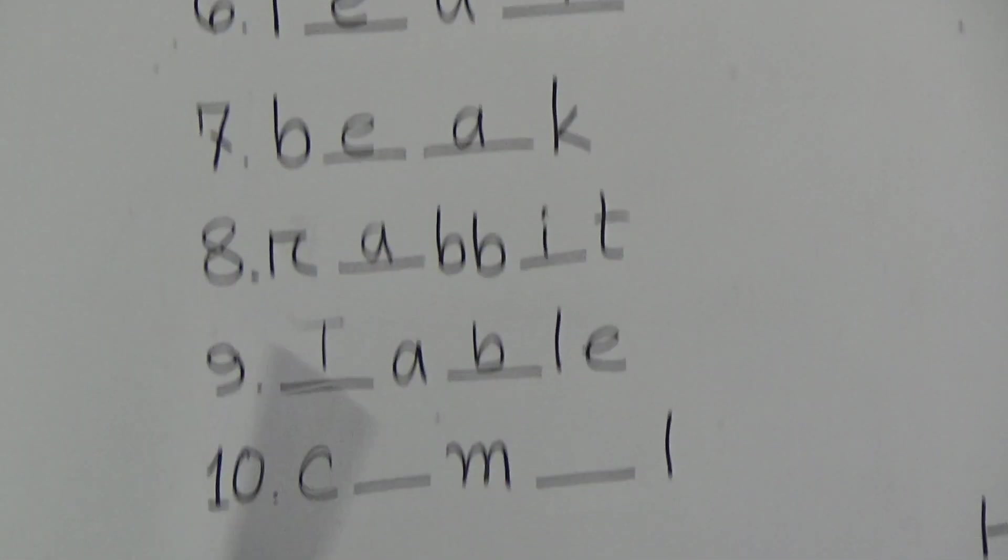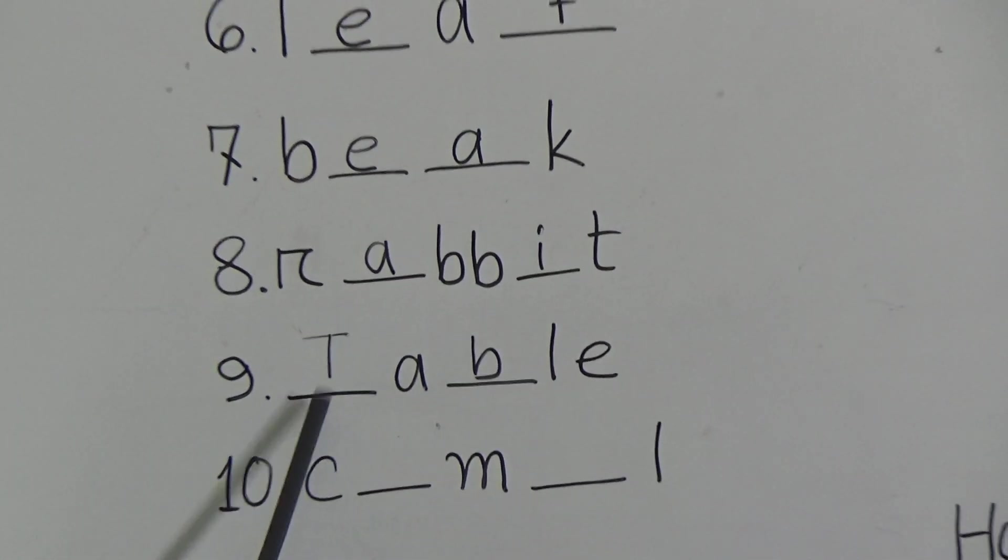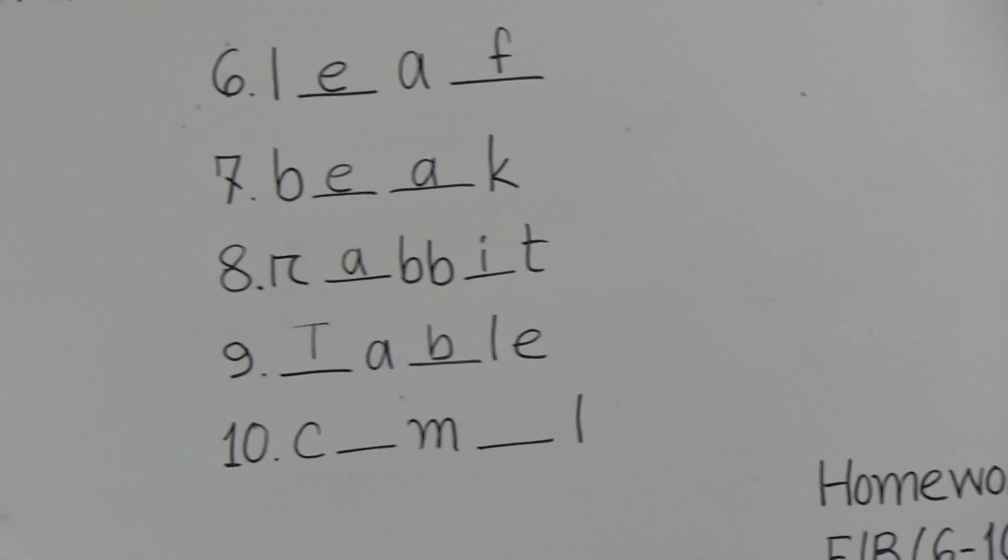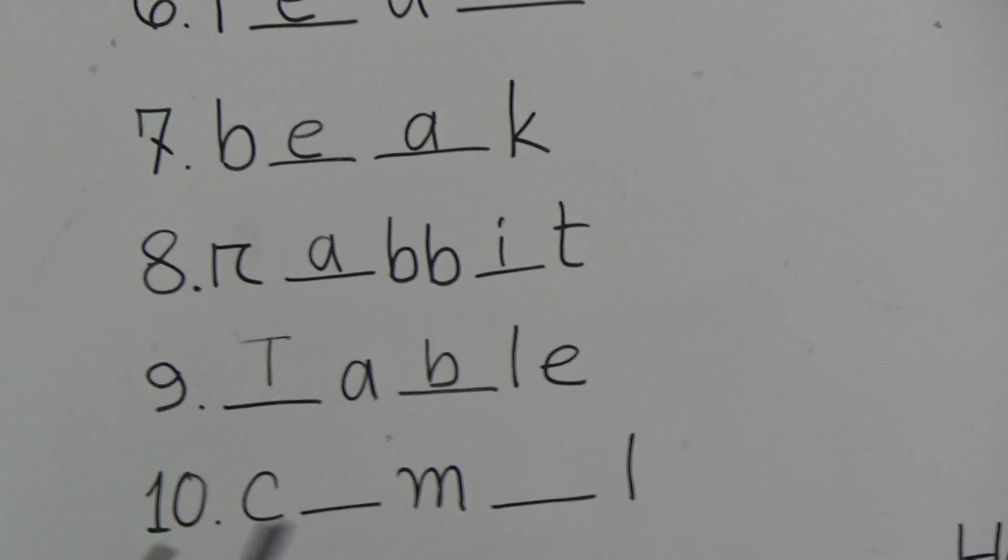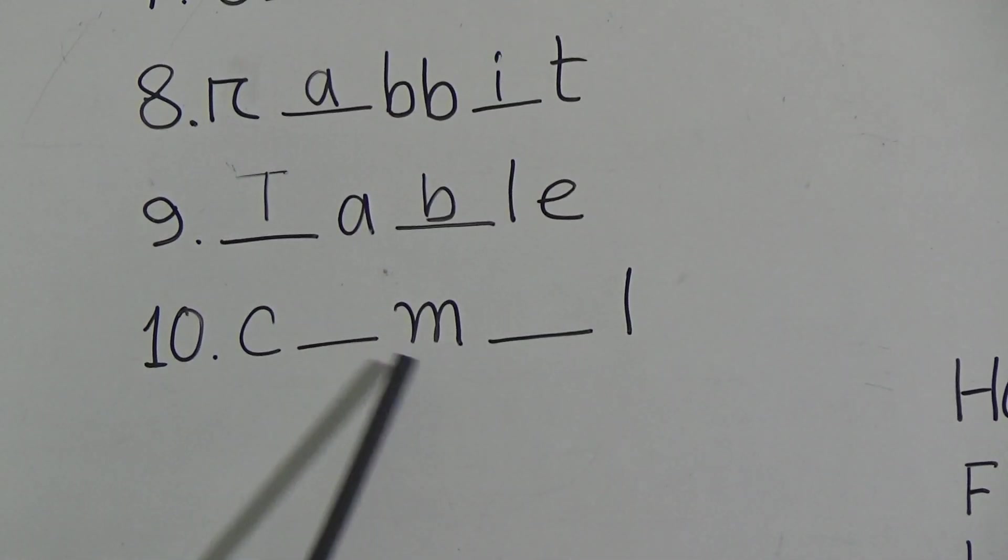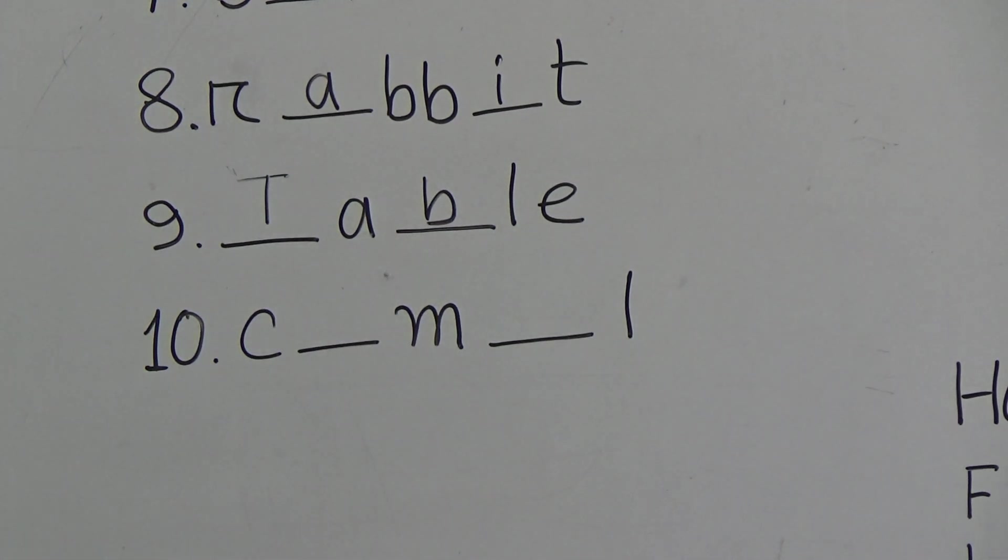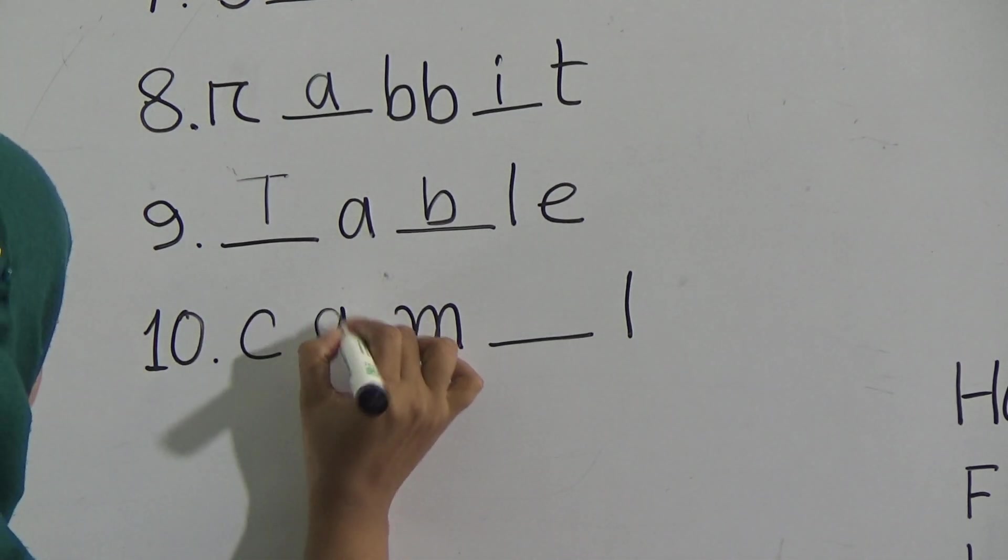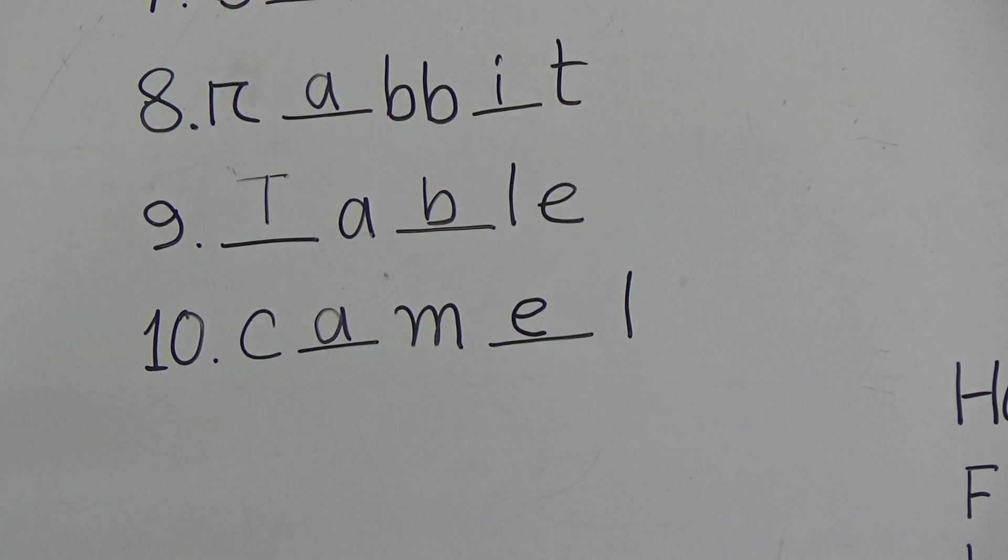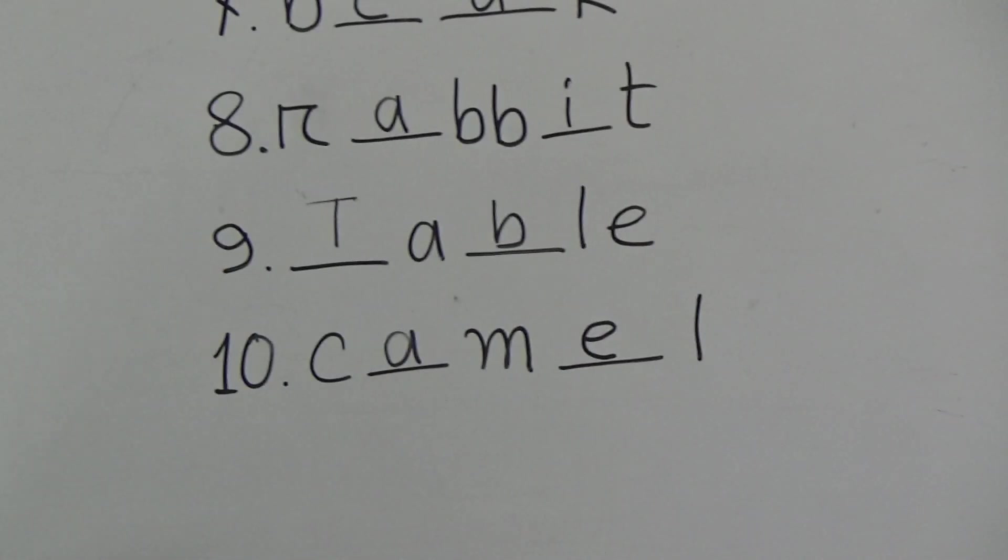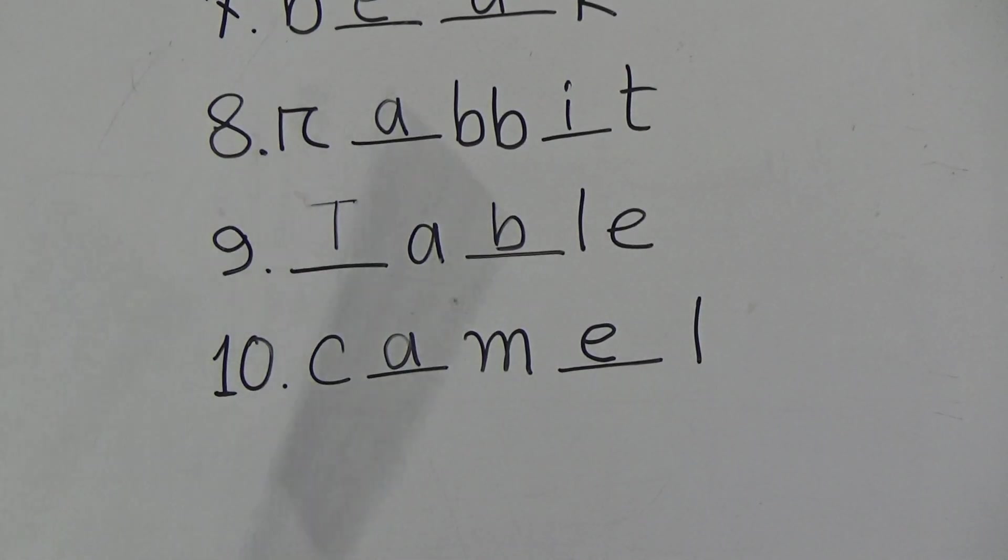Now last one, number ten: C gap A M gap E L. Can you guess the word? This is also a name of an animal. Okay, I'm writing C-A-M-E-L. This is camel and this is also a name of an animal.